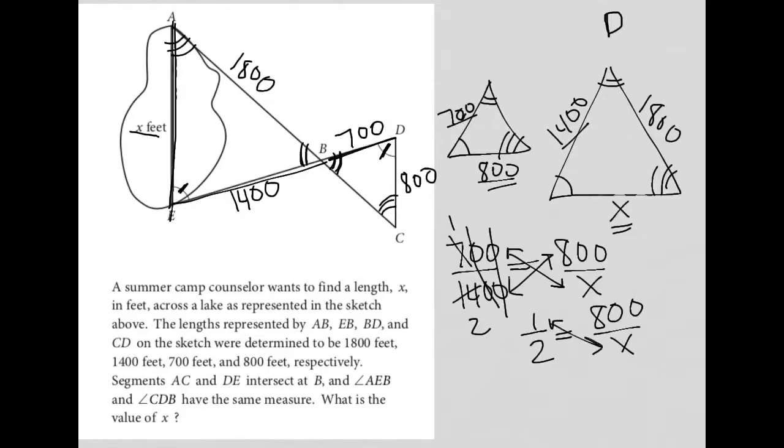So now when I cross-multiply, I get X equals 1,600, and therefore that is my answer.